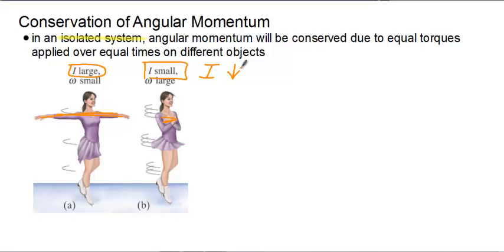There is no external torque acting on her. It is just an internal torque where she is applying that force within her body to pull her arms in. And so because there is no external torque, angular momentum will be conserved.